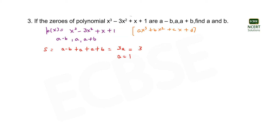Now we substitute the value of a into the three zeros. The values come out to be 1 minus b, 1, and 1 plus b. We have now found the value of a; next we need to find the value of b.